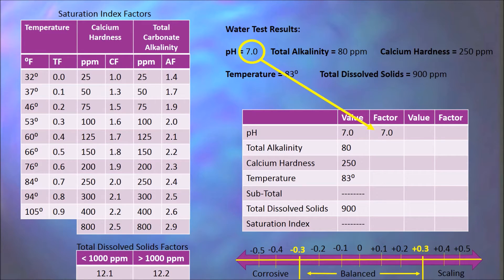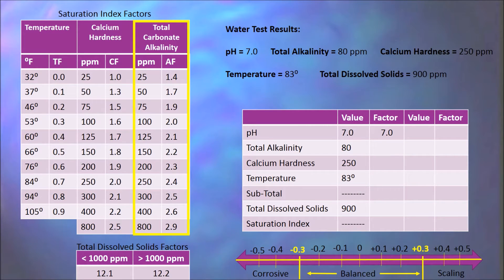Looking at pH, the factor is the value — when it comes to pH and the Langelier Saturation Index, it is what it is. We have a pH level of 7.0, so our pH factor is 7.0. Next, we will find our total carbonate alkalinity factor. Our alkalinity value was 80 parts per million, but 80 is not present in the chart. Whenever we do not have the exact number, we must round to the next higher number. 80 parts per million rounds up to 100 parts per million, giving us an alkalinity factor of 2.0.